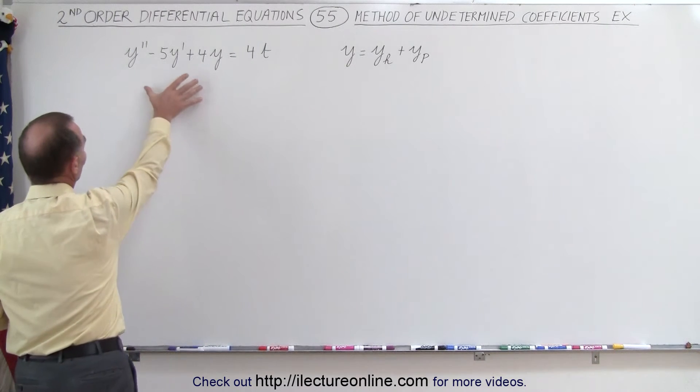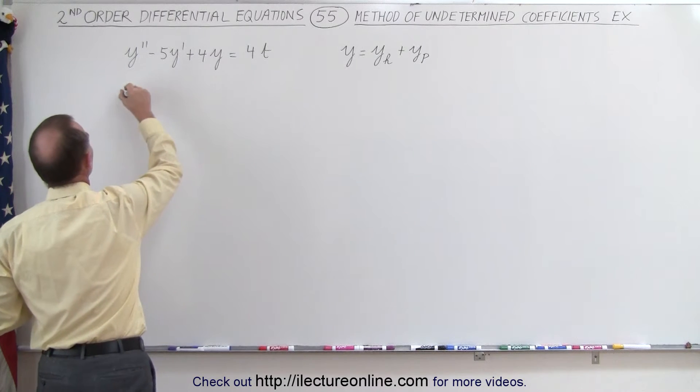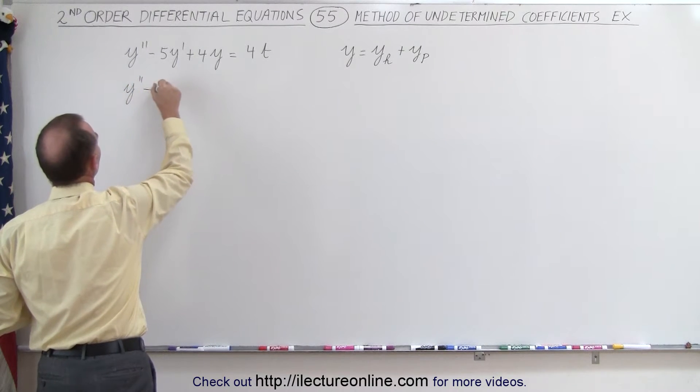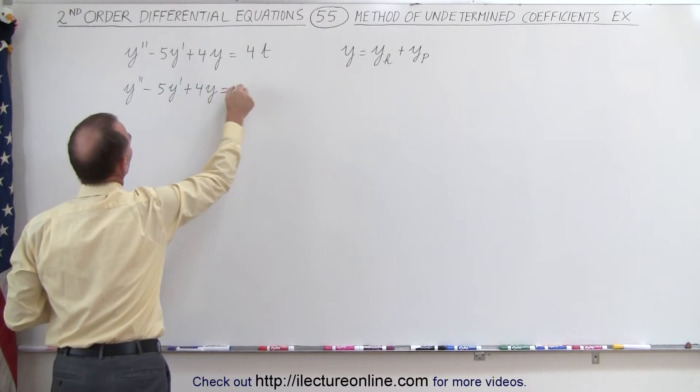Well, what we're going to do is first write this as a homogeneous equation, setting this equal to zero. We get y'' - 5y' + 4y = 0.